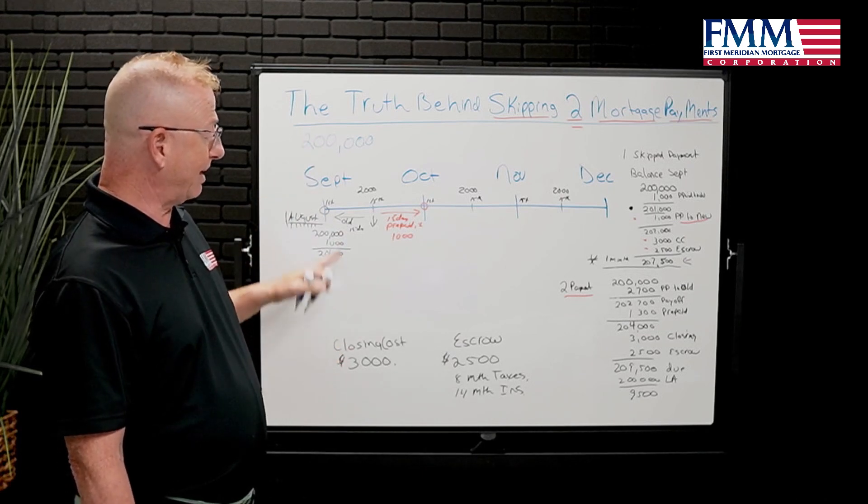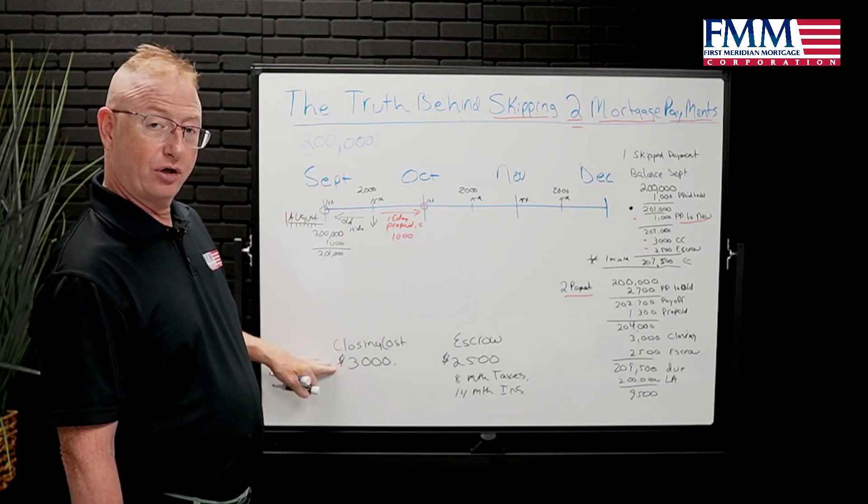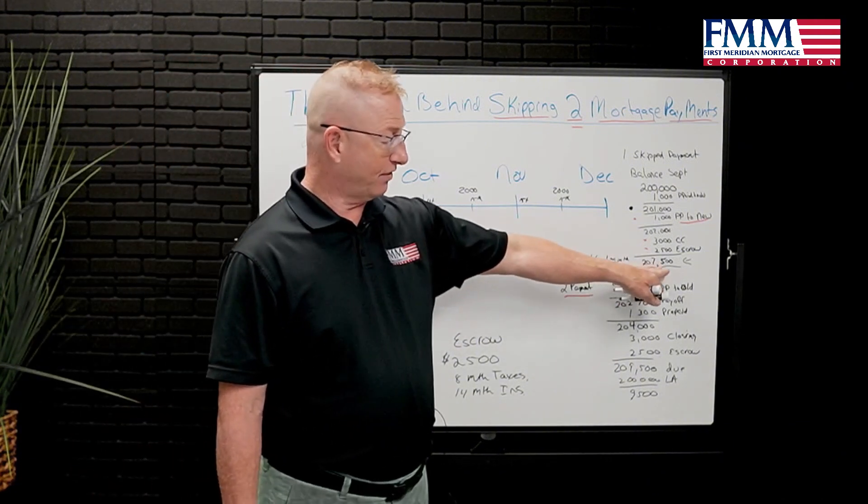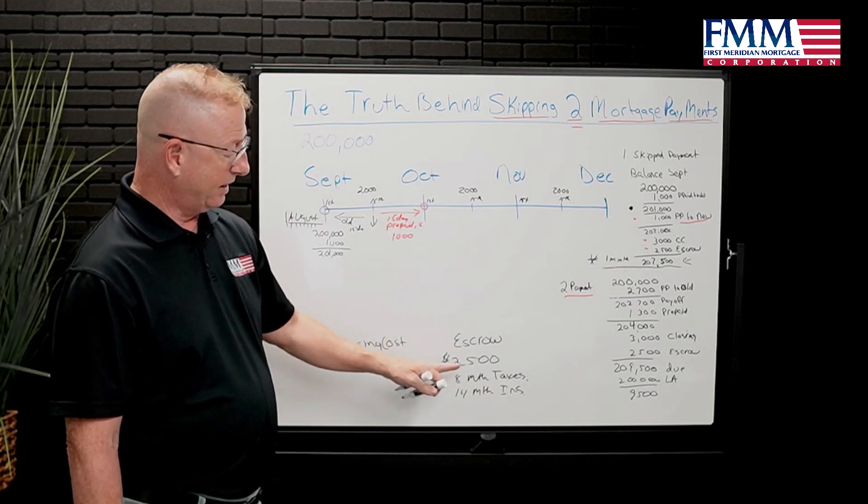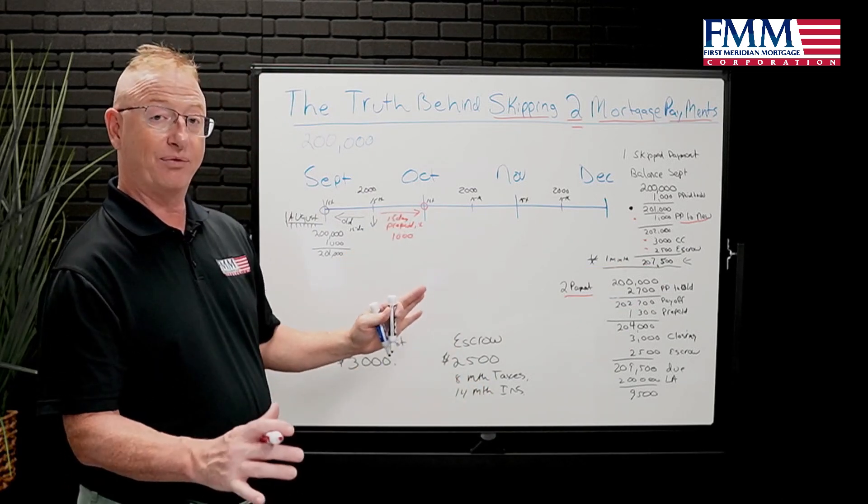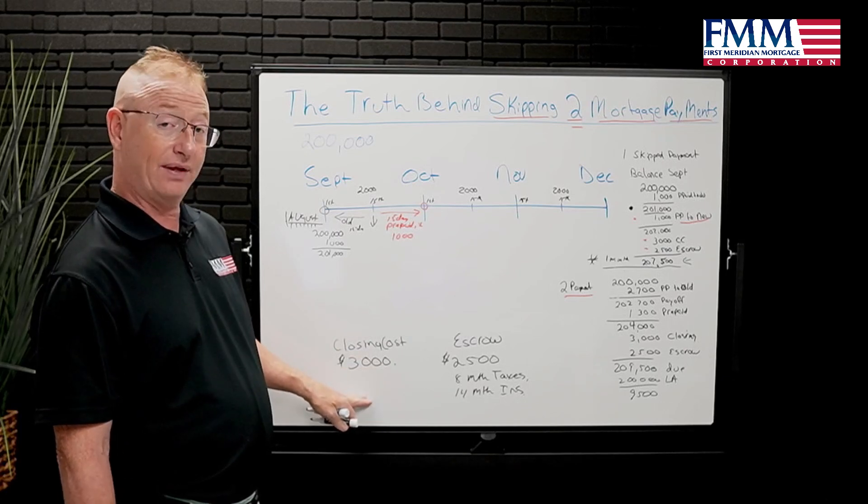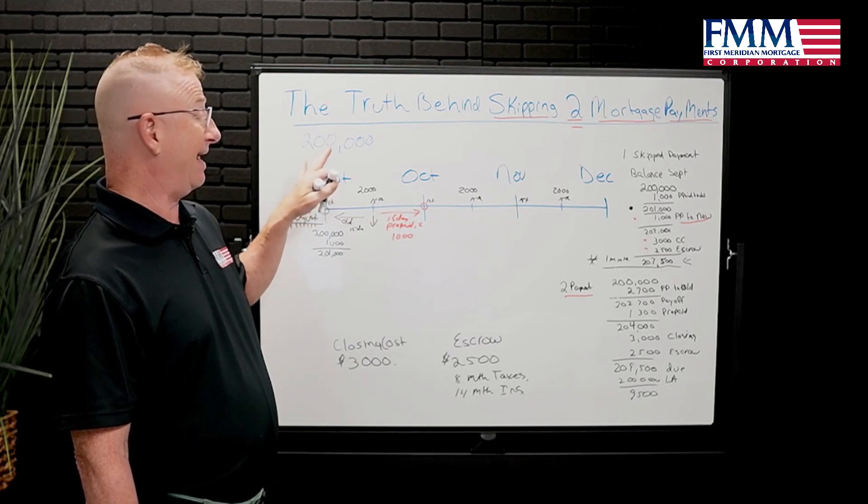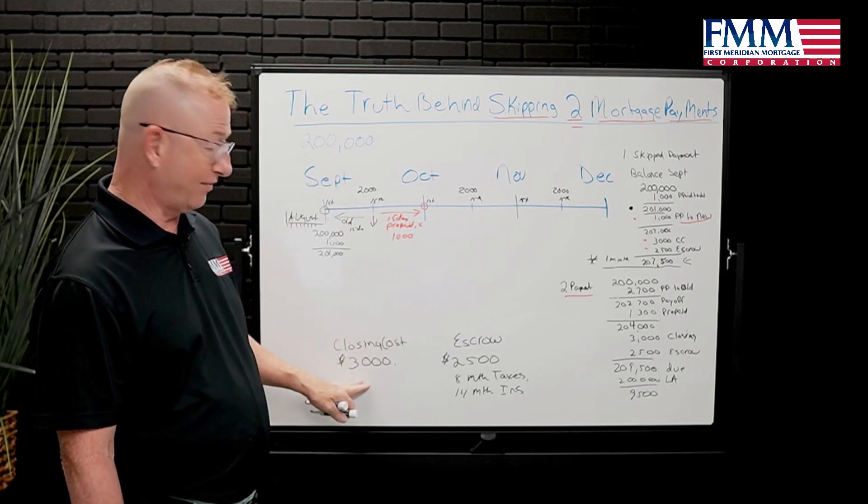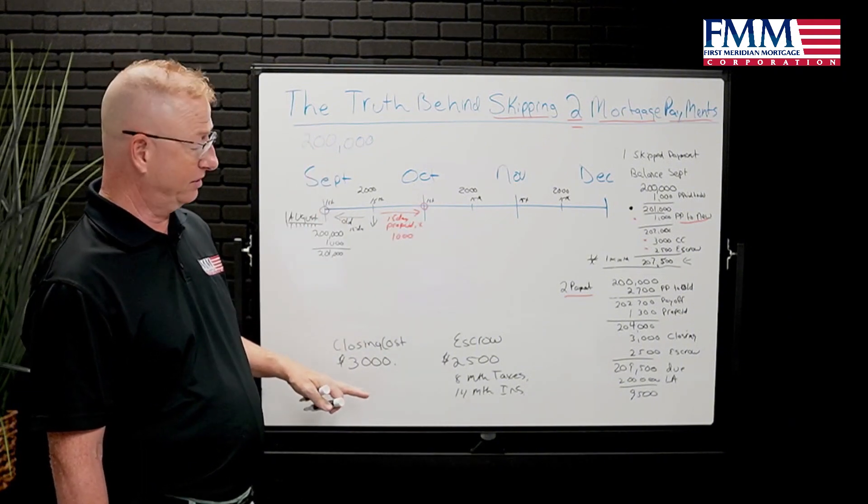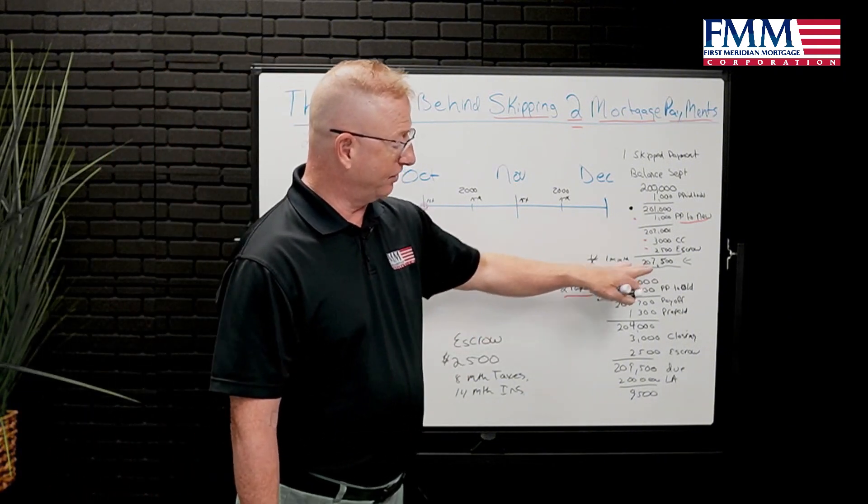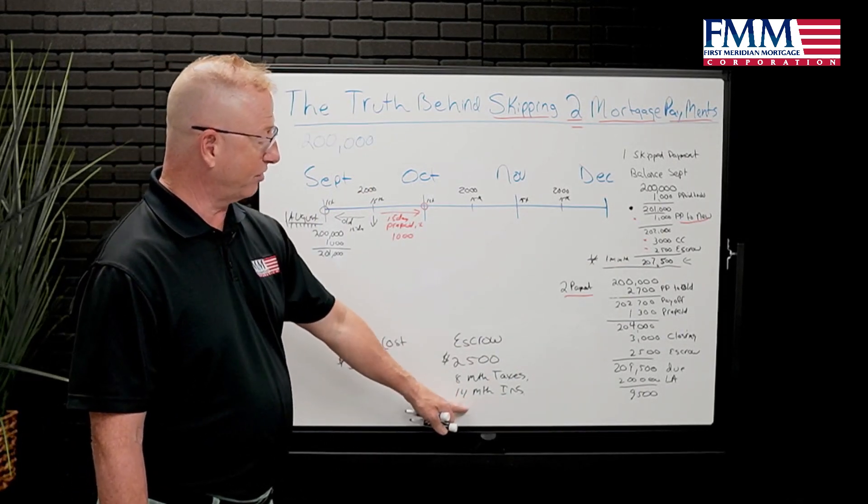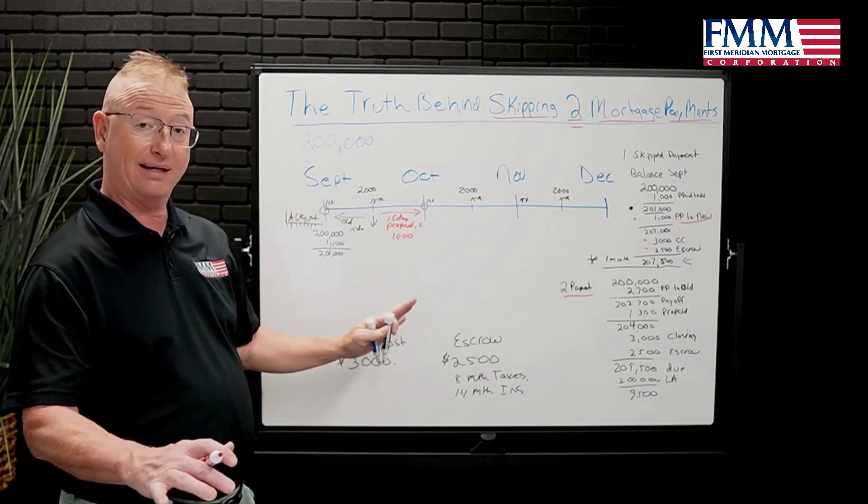Option two, what a lot of people would do is they might just roll in their closing costs and do $203,000, bring $4,500 to the table, get their escrow back, skip a payment. They're back even within 30 days. They only rolled in $3,000. If you did a no-cost and had a lender credit that covered this closing cost, then you would do $200,000, bring the $7,000 to the table. Lender pays the closing cost credit. You get your escrow back. You skip a payment. You're back to $200,000. You're back to even.